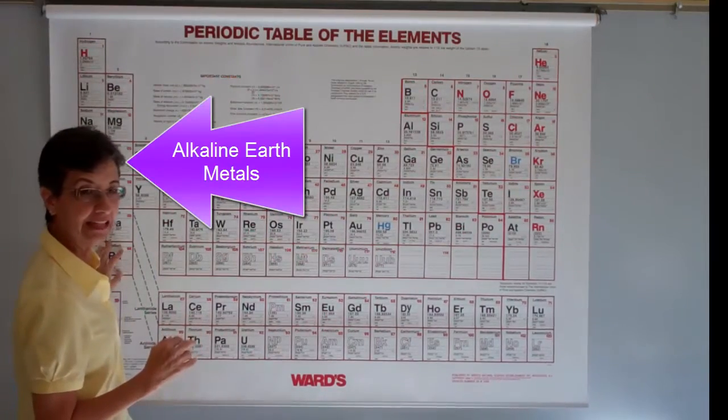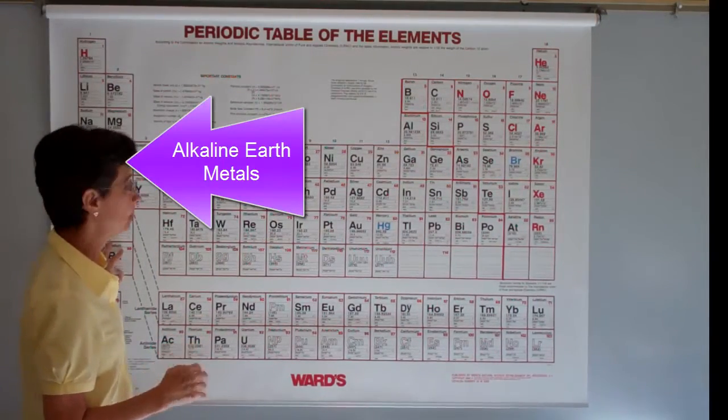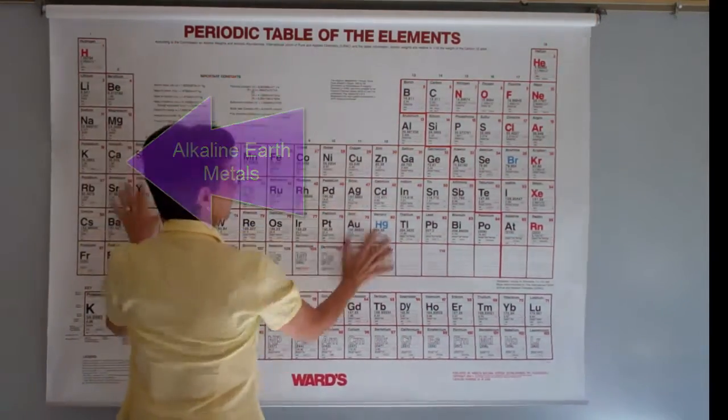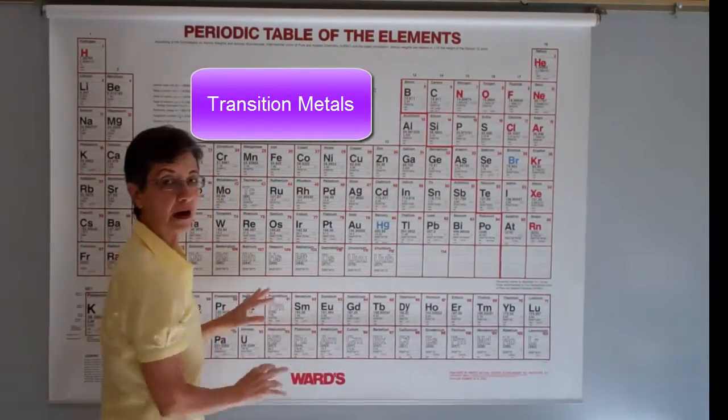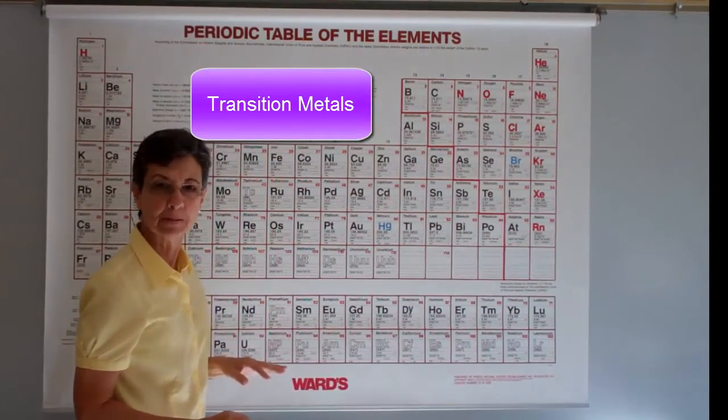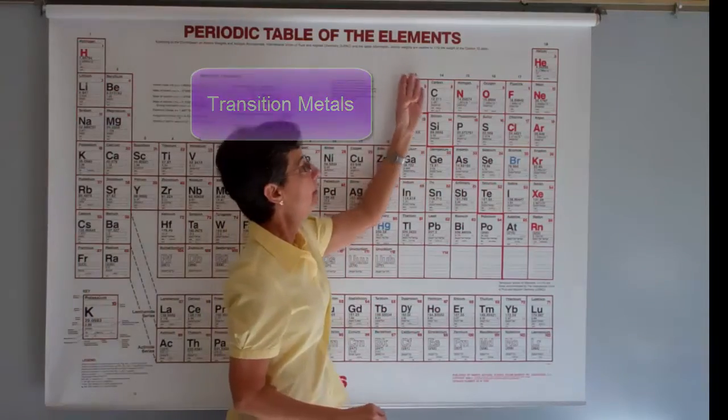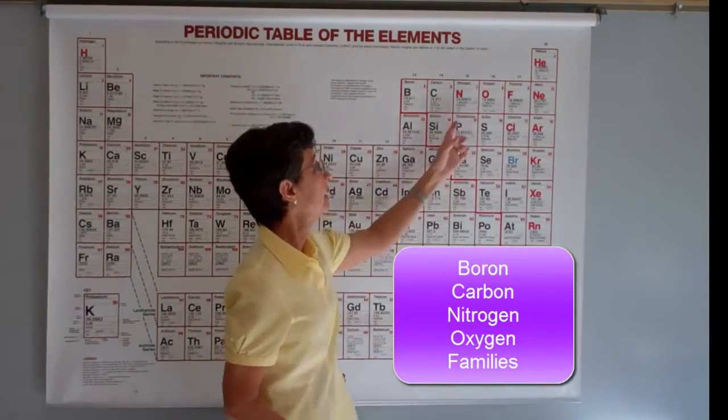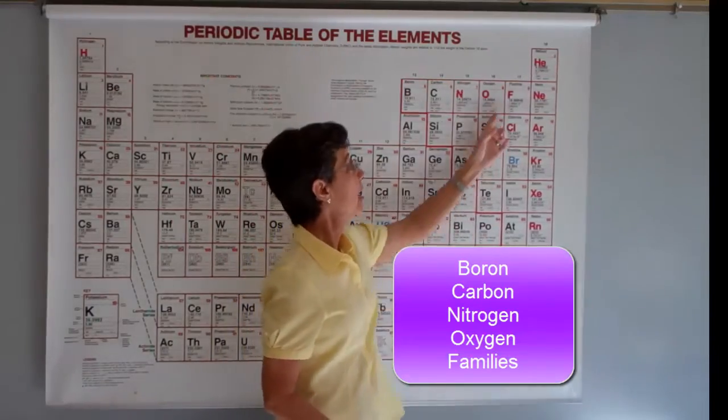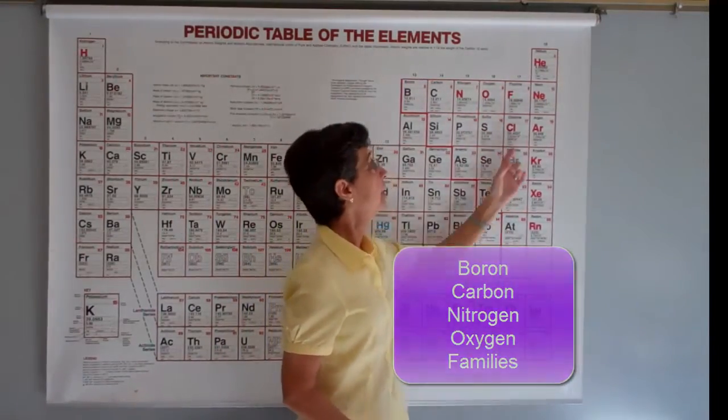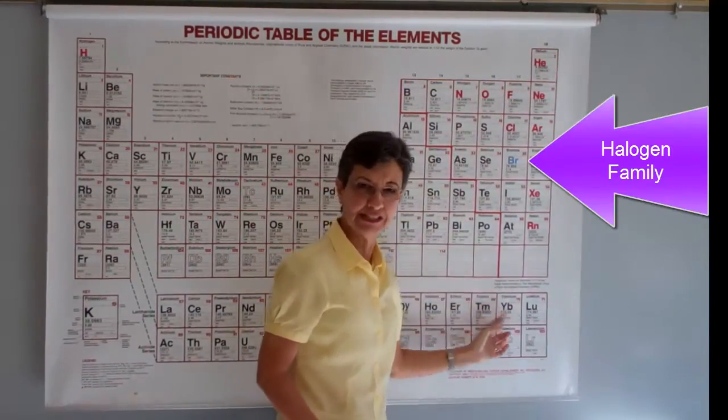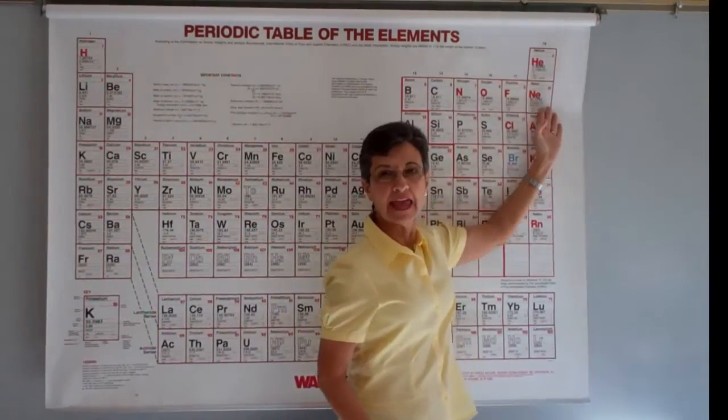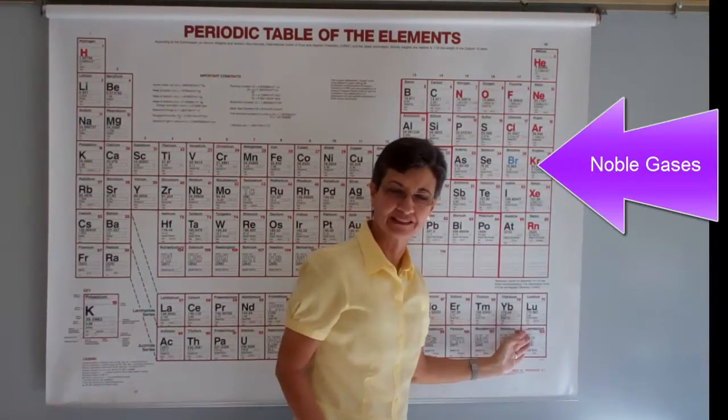These are the alkaline earth metals. These guys right here in the middle are the transition metals. Boron family. Carbon family. Nitrogen family. Oxygen family. Halogens. And these are the noble gases.